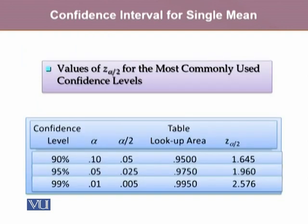Here are the values of z alpha by 2 for the most commonly used confidence levels. For 90% confidence level, the value of z alpha by 2 is 1.645. For 95% confidence level, the value is 1.96. And for 99% confidence level, it is 2.576.